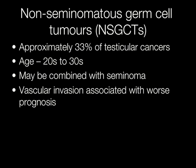Approximately a third of testicular cancers are non-seminomatous germ cell tumours. These usually occur in the age group of 20 to 30, which is rather younger than the age at which seminomas occur. Vascular invasion is associated with a worse prognosis, and sometimes seminomas can occur in combination with non-seminomatous germ cell tumours. These may be referred to as either combined or mixed germ cell tumours.